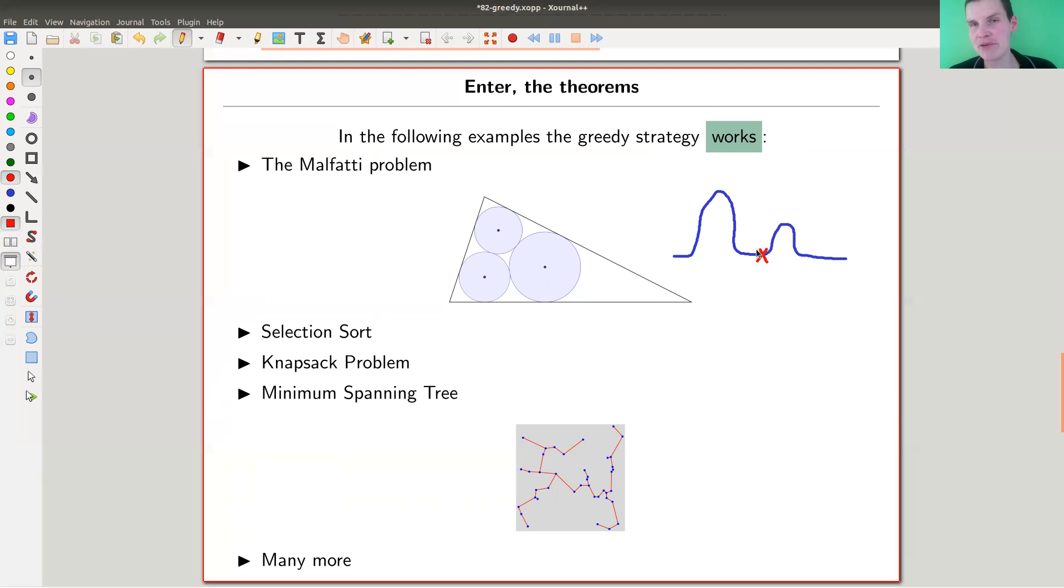And then the greedy strategy would be, oh, it goes up here faster to the right, faster than to the left. So I go to the right. And there's no reason why you should find the biggest bump using the strategy, right? So in this example, we actually don't. But in some problems you do, and this is kind of the theorem here. So for the Malfatti problem, it works.